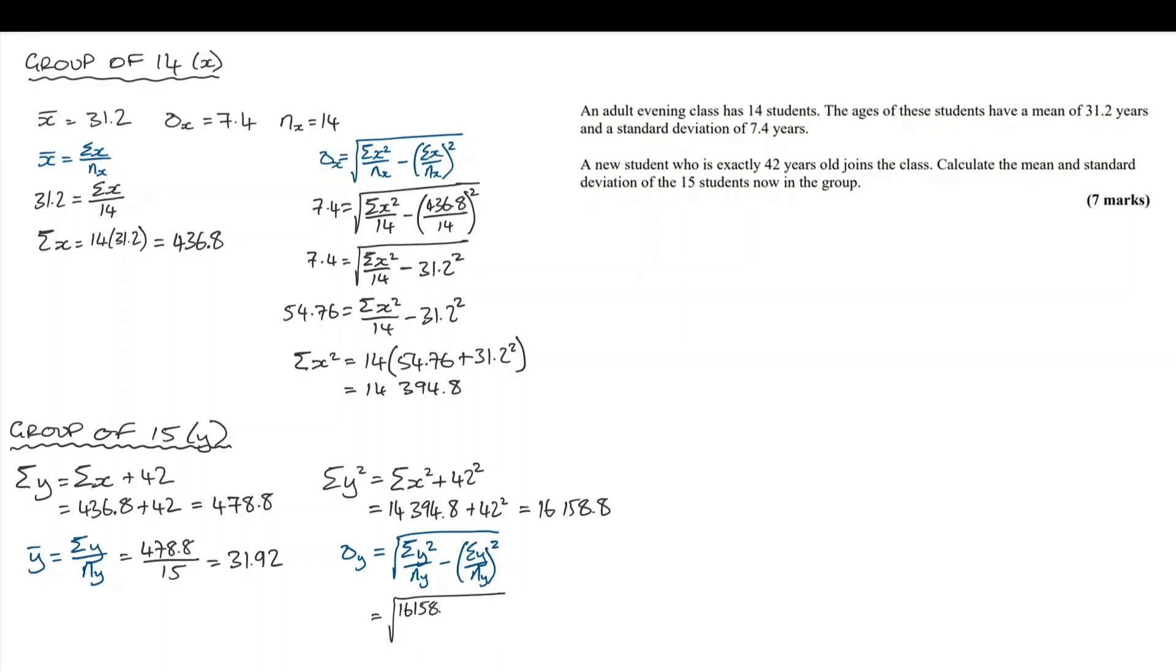Substituting in all our new information, 16,158.8 over 15, subtract 478.8 over 15 squared. And that goes over to our calculator, and we get 7.64.